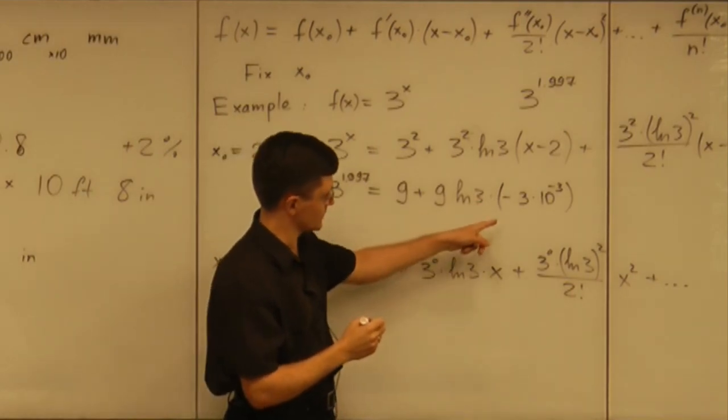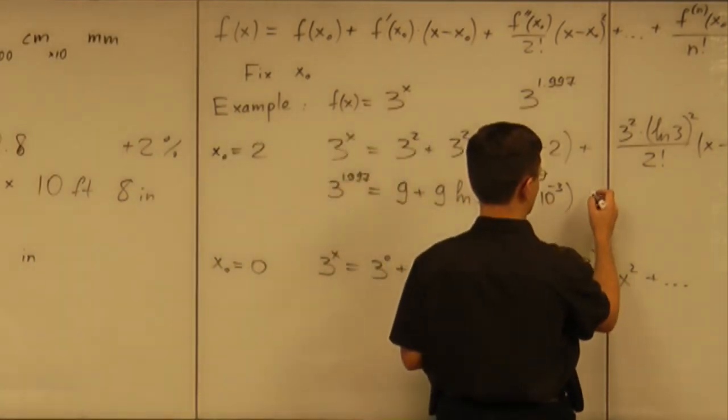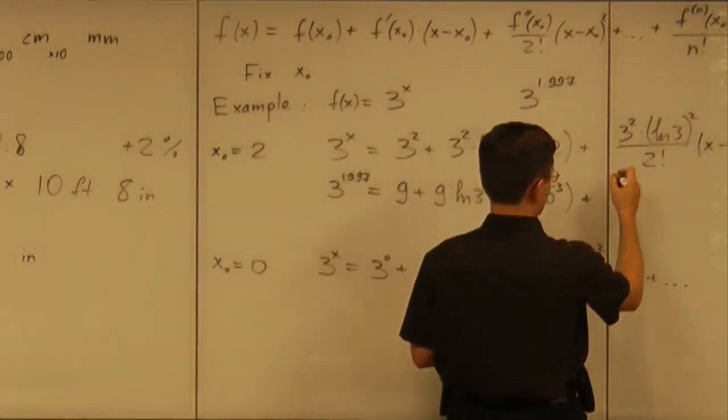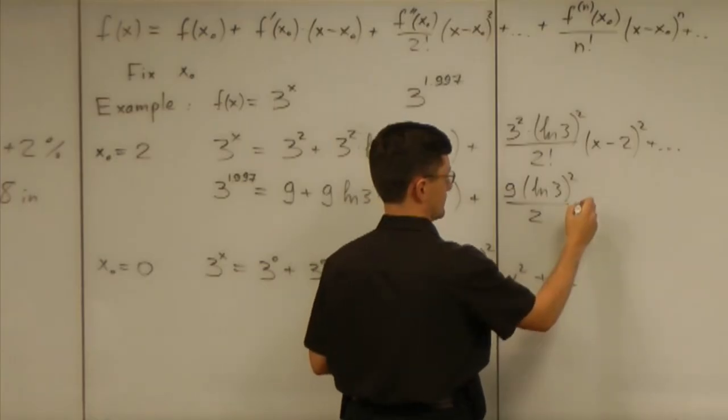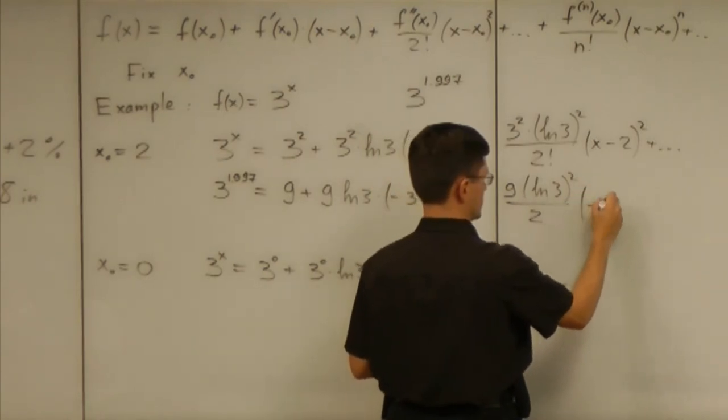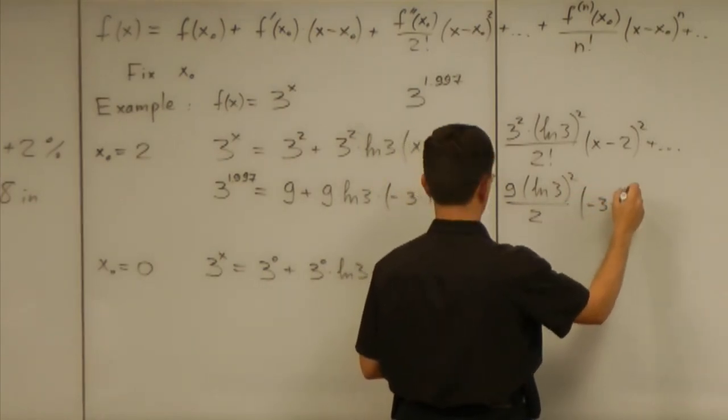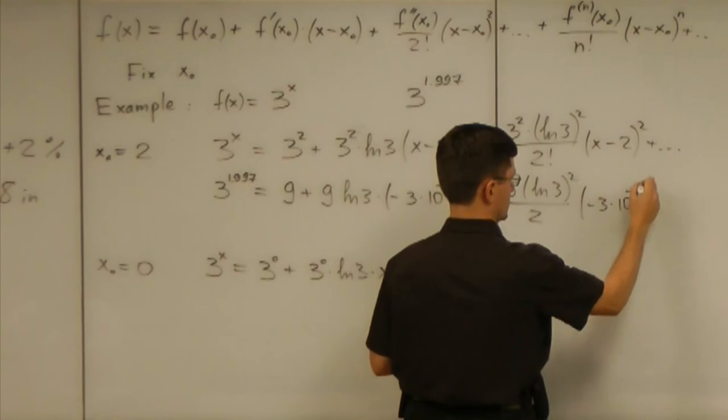Once I write it in this way, we can square and cube it easily. Then 9 times (natural log of 3) squared over 2 times (negative 3 times 10 to the negative 3) squared.